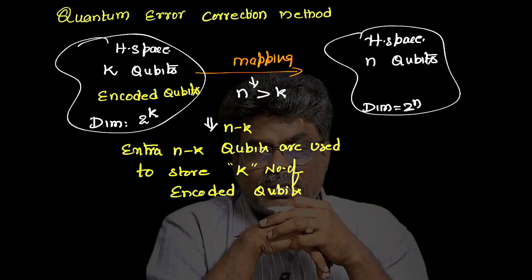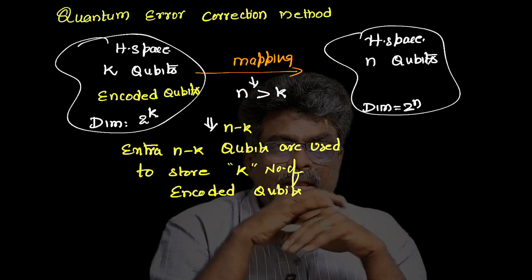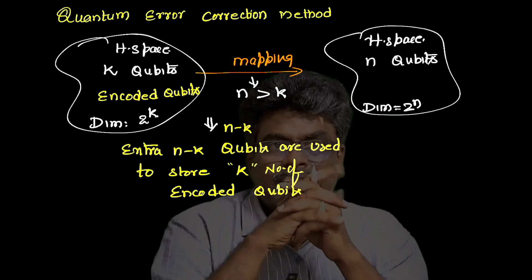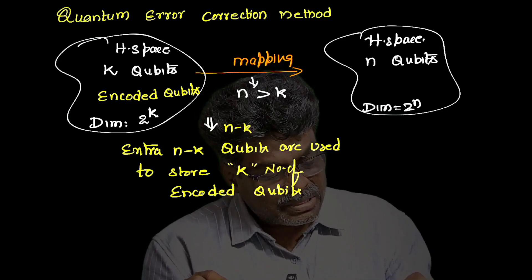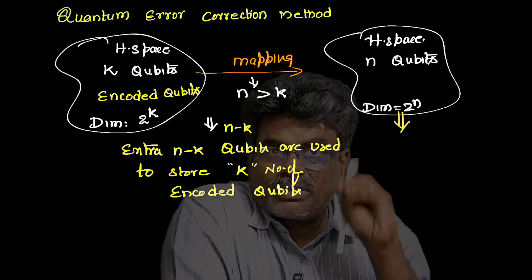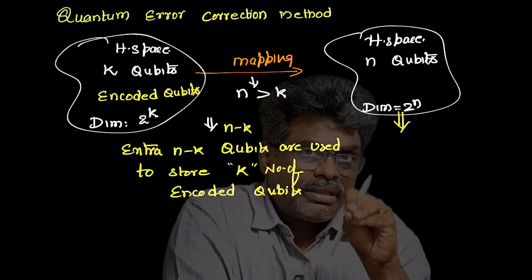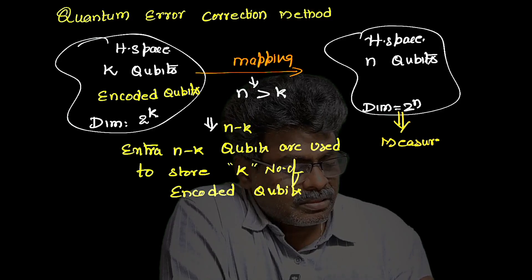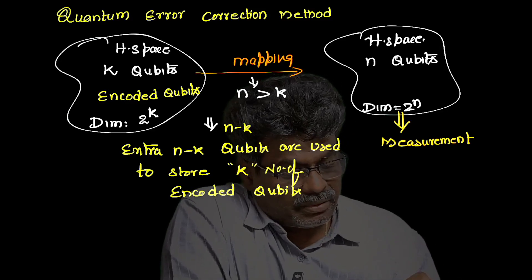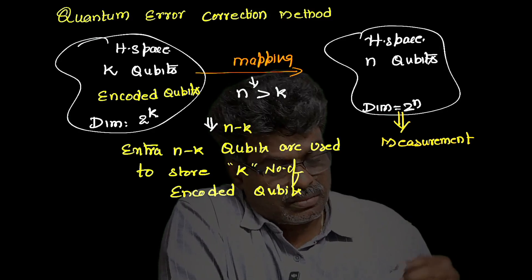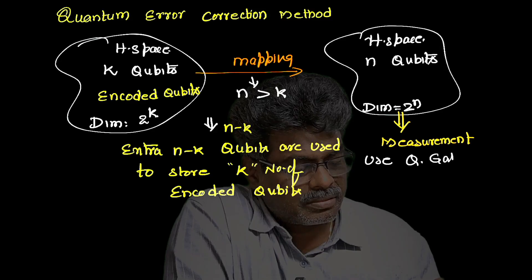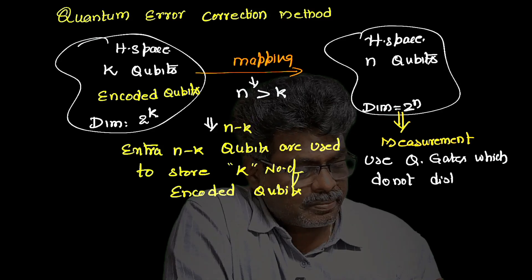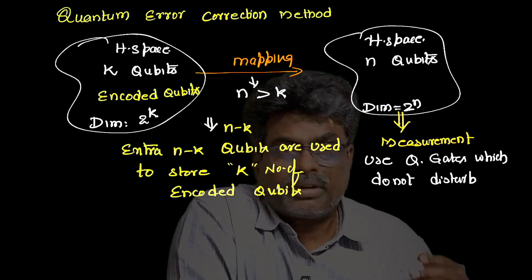We are using some extra number of qubits to store the initial information. When we detect, the quantum states might be disturbed, but here we are doing the measurement using quantum gates which do not disturb the given initial quantum information state. We will make the measurement using quantum gates which do not disturb the initial state.